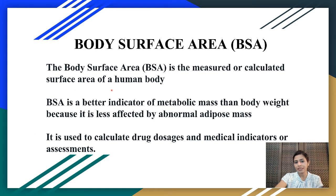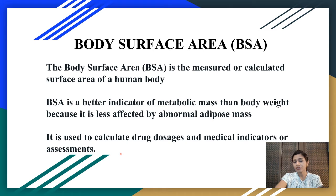Body surface area (BSA) is the measured or calculated surface area of a human body. BSA is a better indicator of metabolic mass than body weight because it is less affected by abnormal adipose mass. It is used to calculate drug dosages and medical indicators or assessments — mainly to administer chemotherapeutic drugs and monoclonal antibodies, and to find medical indicators such as cardiac index, stroke volume index, and so on.